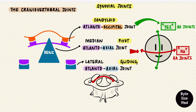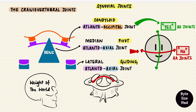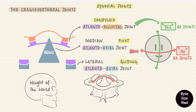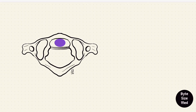Atlas carries the cranium — a reference to Greek mythology of Atlas carrying the weight of the world on his shoulders. It turns out atlas actually carried the sky and not the world, but that's not important to us right now. The dens is held in place against the anterior arch of atlas by a ligament that goes across from one lateral mass of atlas to the other — that is the transverse ligament of atlas. It separates the dens from the spinal cord.